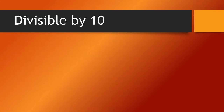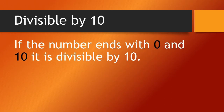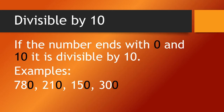Divisible by 10: if the number ends with 0, it is divisible by 10. Examples: 780, 210, 150, 300. These are all divisible by 10.